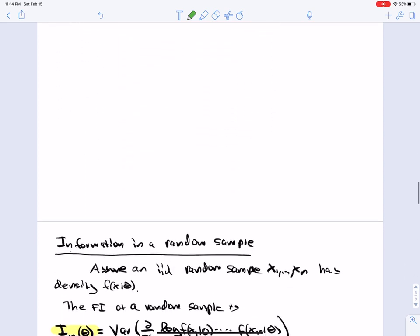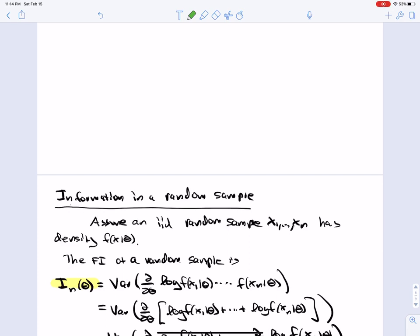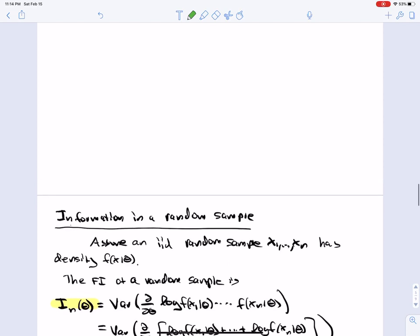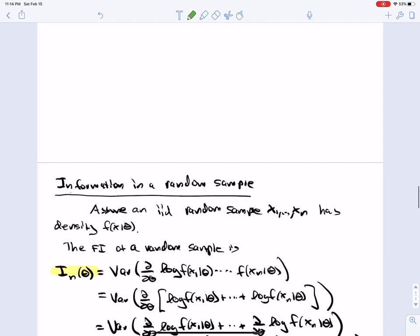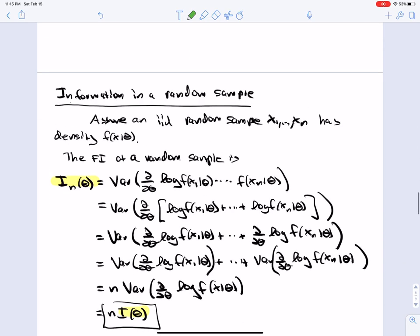Now, one thing that will be useful to us is to talk about the information in a random sample. So previously, we've been talking about the information of a single data point. So it should be no big surprise that if you have N independent samples, that you would get N times the Fisher information. And we can actually show that rigorously just using the definition.